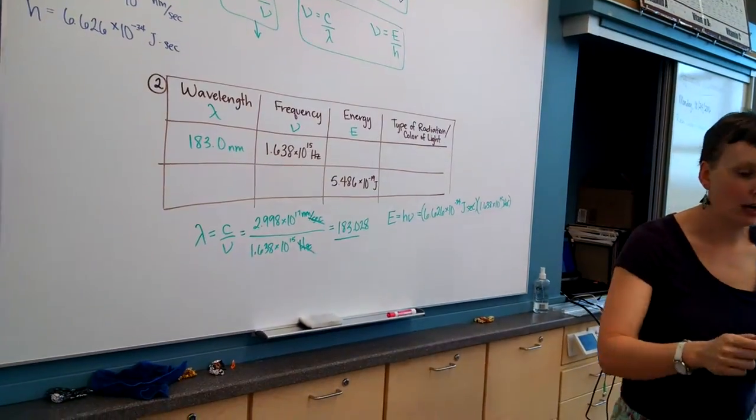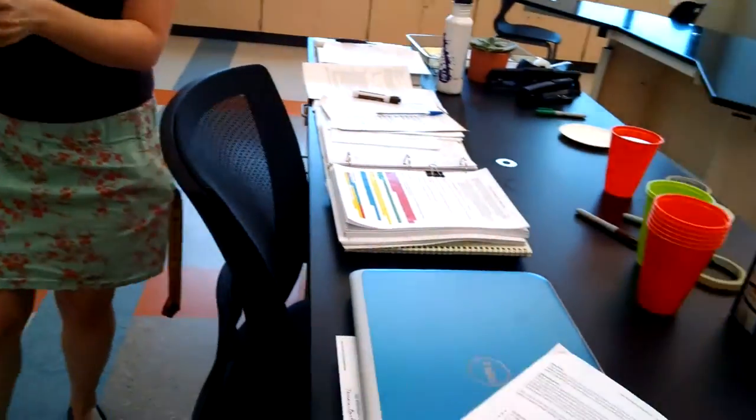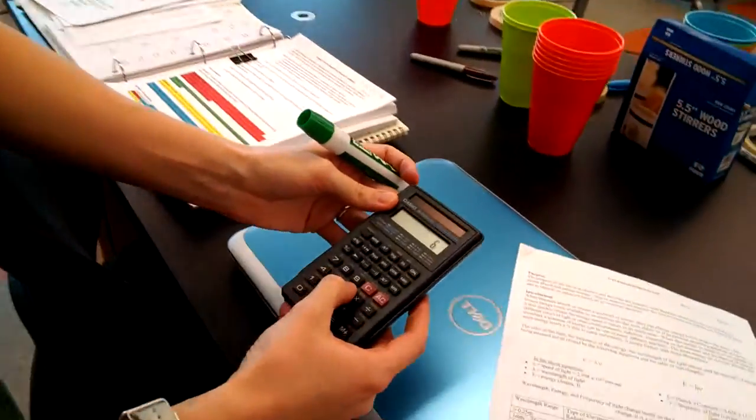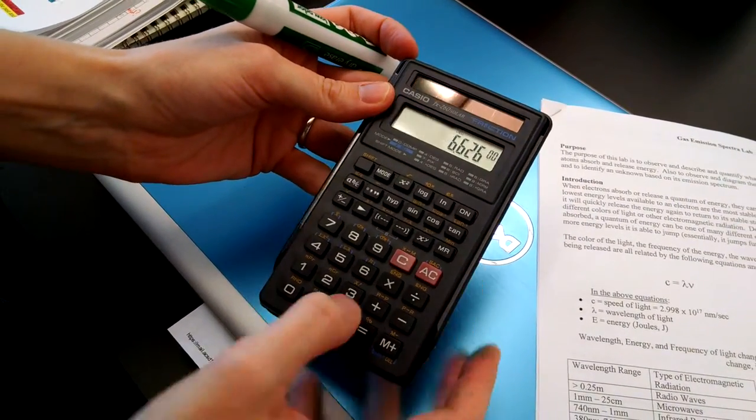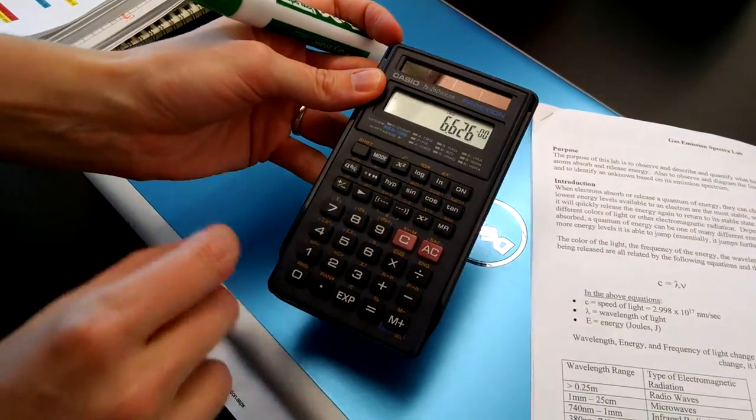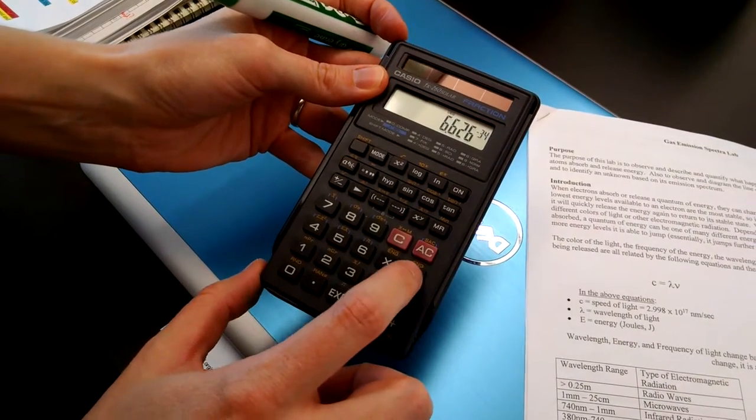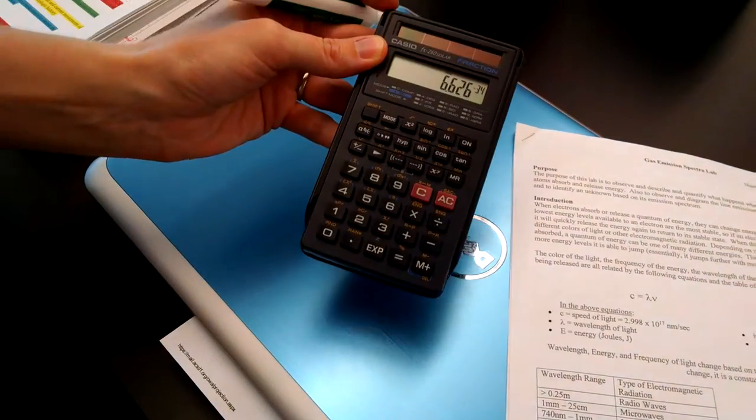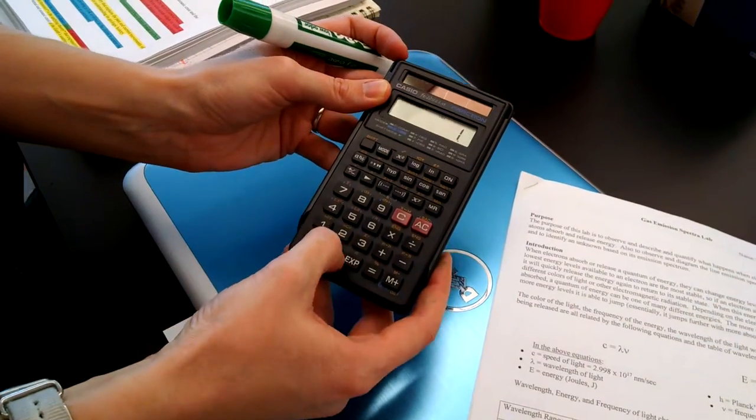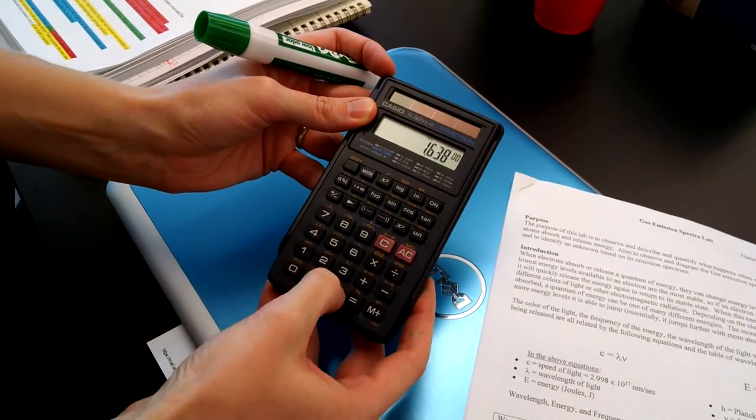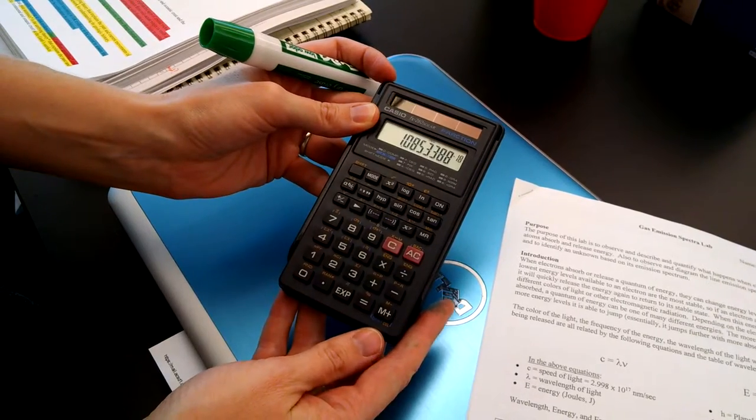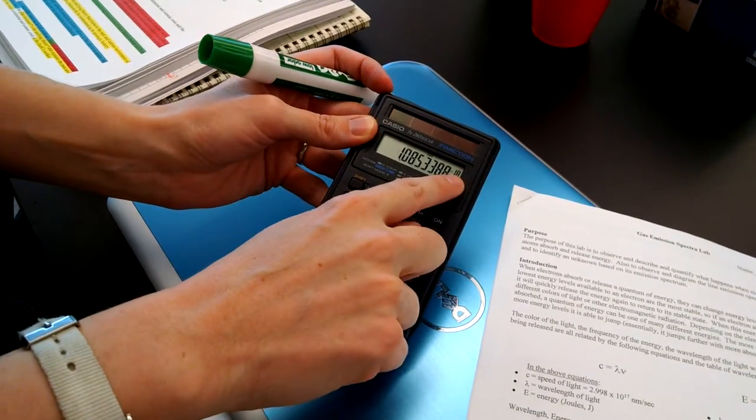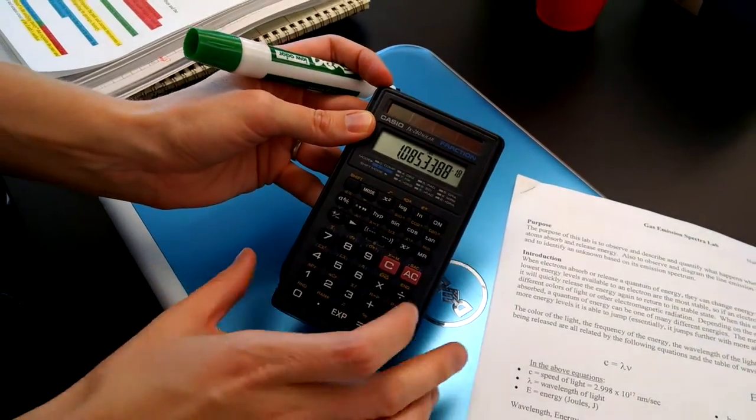Punch that into your calculator the same way. 6.626 EXP, the negative on these calculators is up here, 34, times 1.638 EXP 15, and we get 1.085 times 10 to the negative 18th.